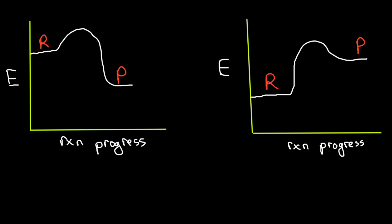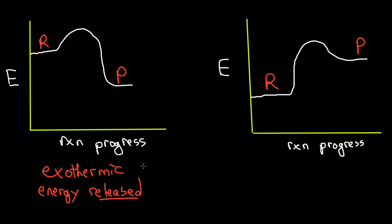If the reactants have higher energy than the products, the reaction is exothermic — meaning heat or energy is released. In a reaction system, there is the system where the reaction takes place and the surrounding environment. Energy cannot be created or destroyed; it can only be transferred. In an exothermic reaction, the reactants release energy into the environment, which is why the products have lower energy. 'Exo' means external — the substances lose energy to the surroundings.